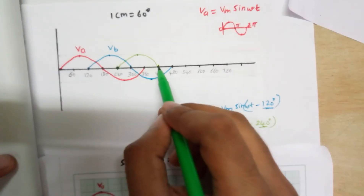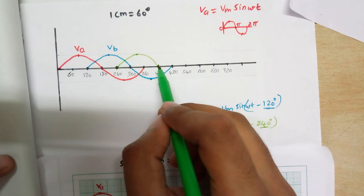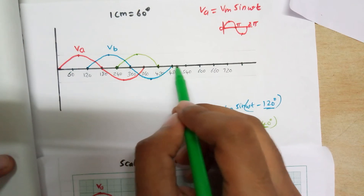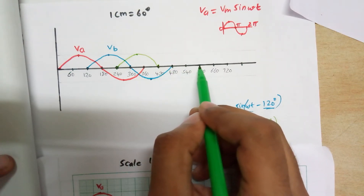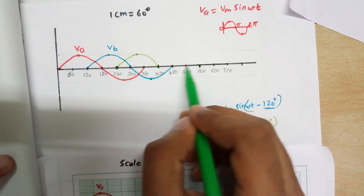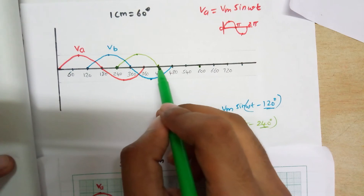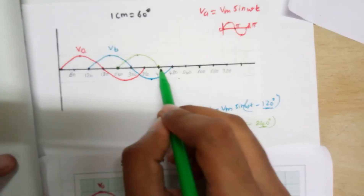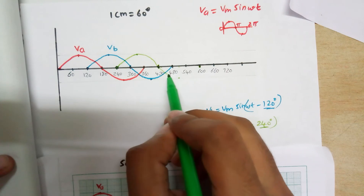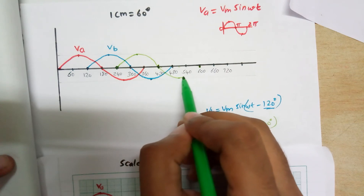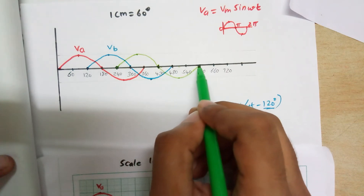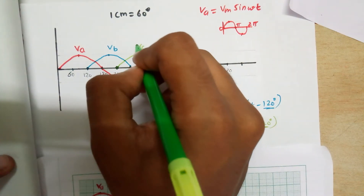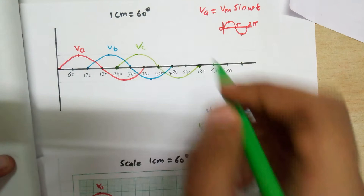The bottom part of Vc will start from 420 degrees and conduct for 180 degrees, so the ending point will be at 600 degrees. The starting point, ending point, and peak point after 1.5 cm — connect these points. This is our Vc.